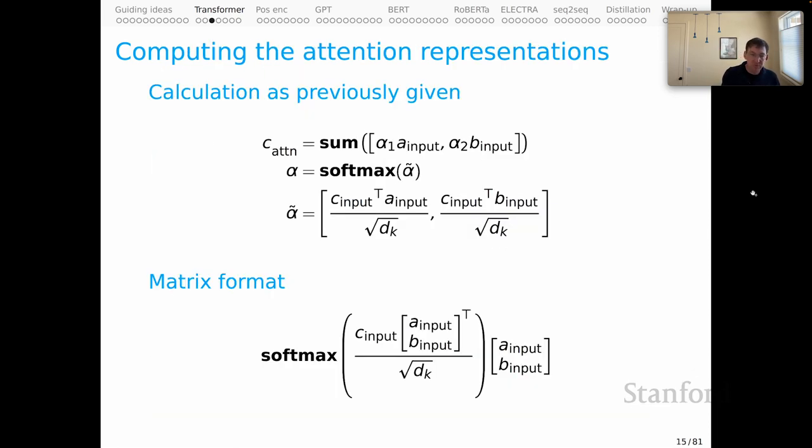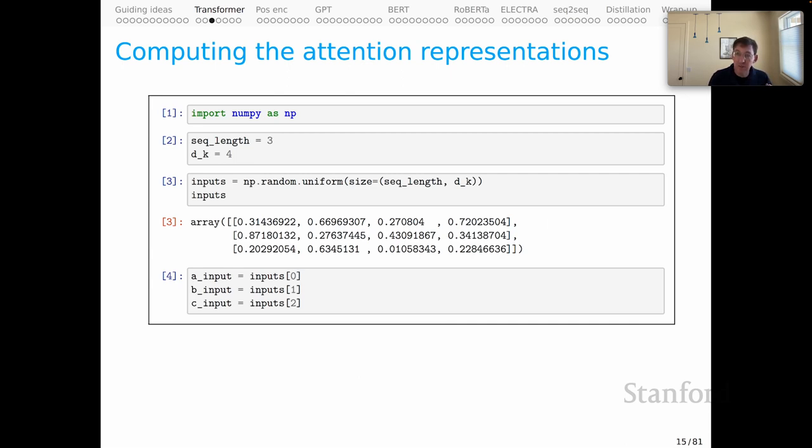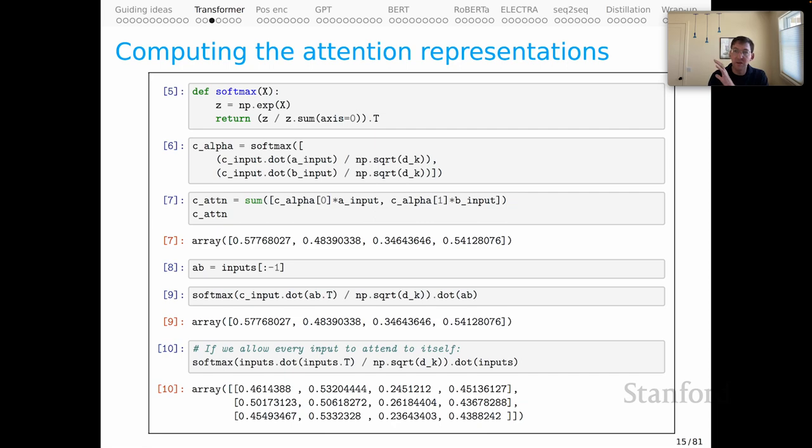Since attention is so important for these models, I thought I would linger a little bit over the attention calculation. What I've shown you so far is the calculation that I've given at the top of the slide here, which shows piecewise how all of these dot products come together and get rescaled and added in to form C attention in this case. In the Attention is All You Need paper, and in a lot of the subsequent literature, that calculation is presented in this matrix format here. And if you're like me, you might not immediately see how these two calculations correspond to each other. And so what I've done is just offer you some simple code that you could get hands on with to convince yourself that those two calculations are the same. And that might help you bootstrap an understanding of what you typically see in the literature.